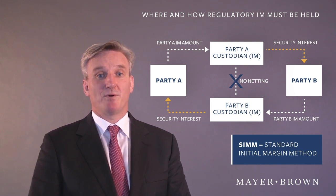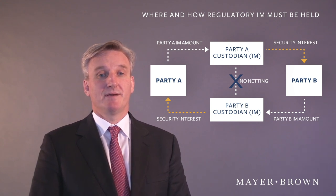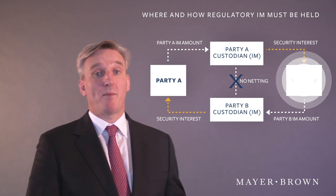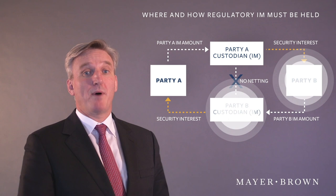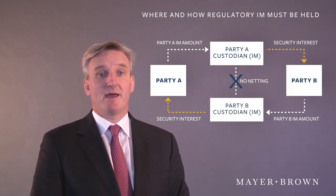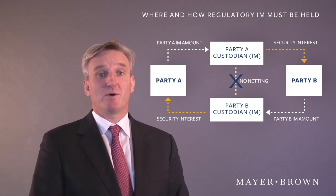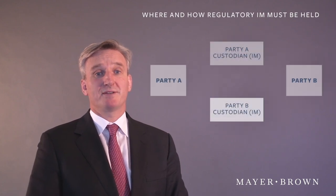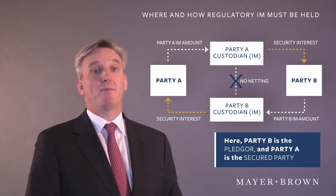SIMM, the standard initial margin method, is a scalable and stress-tested model which involves calculating the margin to be posted based on risk factors and agreed data sources. A security interest or pledge over the IM and account with the custodian is granted to party B, who is the secured party. Looking at the bottom part of the diagram, party B is also required to post IM to its custodian — it may be the same custodian or it may not be. For example, party A's custodian could be the Bank of New York Mellon and party B's custodian could be Euroclear. The two sets of posted IM cannot be netted against each other; they must be segregated. Party B will also be the pledgor and party A the secured party.